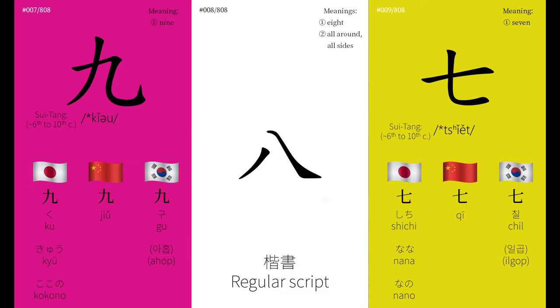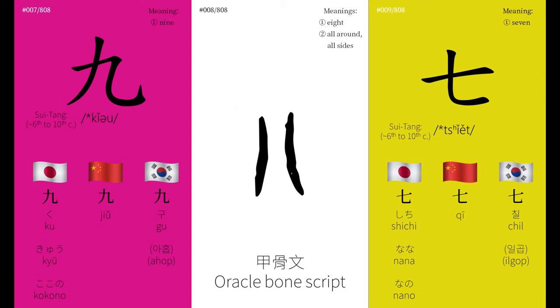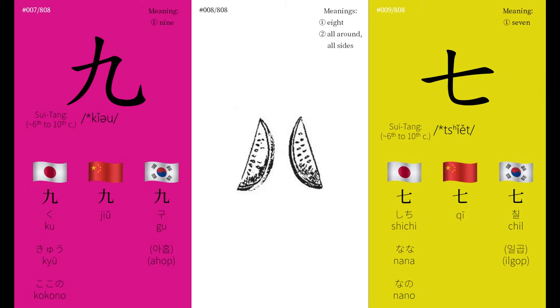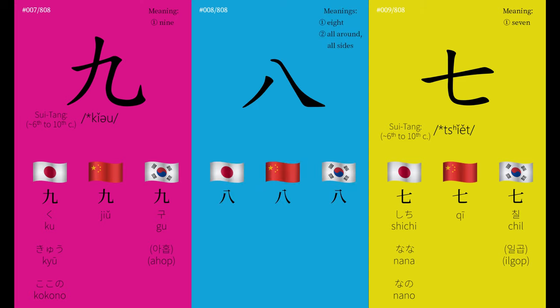What those couples didn't know is that the character for 8 also used to mean to divide or separate. In fact, the symbol is a depiction of two objects facing away from one another. This is why the modern character for divide simply adds the character for knife underneath. The character mostly means 8, but it sometimes has the sense of all around, all sides.